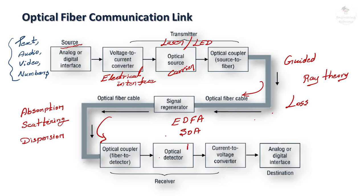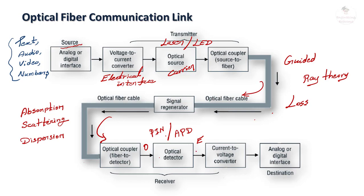The optical detector can be a PIN diode (P-type Intrinsic N-type diode) or an APD (avalanche photodiode). The optical detector converts the optical signal into an electrical signal — a resultant output current normally proportional to the incident optical signal level. This electrical current is then converted into voltage by a current-to-voltage converter, where the variation of voltage is proportional to the information. Finally, the analog or digital interfaces convert the received information back into original form suitable for the destination.